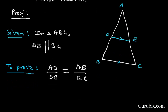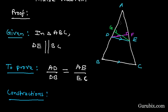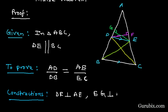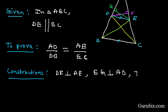We need to do some construction in the figure. We draw a perpendicular DF on AE and another perpendicular EG on AD, and we join DC and BE. So the construction is: DF perpendicular to AE, EG perpendicular to AD, and we join BE and DC.